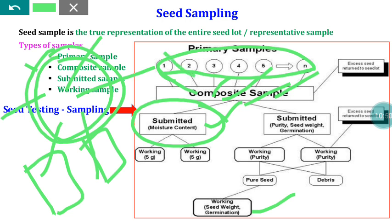For each and every crop there is a quantity specification for submitted sample and working sample. Initially we take more primary samples, then mix them to form the composite sample, and then through mixing and dividing we arrive at the prescribed quantity of the submitted sample. Some instruments and manual methods are available for mixing and dividing operations. The submitted sample is then packed and submitted to the seed testing laboratory for quality assessment.